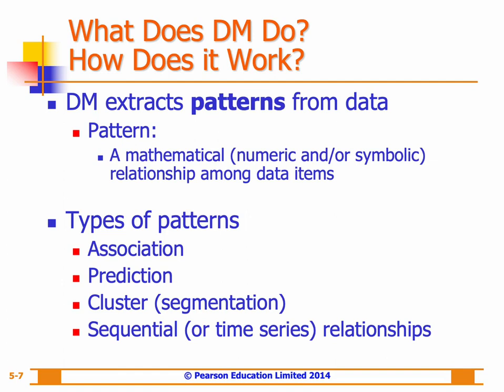In associations, data mining tries to find commonly co-occurring groupings of things, which is helpful in recommendation systems used in e-commerce. Prediction tries to tell the nature of future occurrences of certain events based on the past, such as forecasting temperature. Clustering tries to identify natural groupings based on known characteristics, such as assigning customers to segments based on demographics and past purchase behavior. Finally, sequential relationships tries to discover time-ordered events, such as predicting that a banking customer with a checking account will open a savings account followed by an investment account within a year.